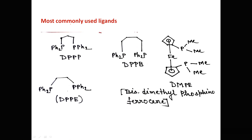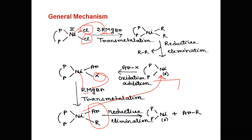Now we see the most commonly used ligands for Kumada coupling reactions. These are: dppp (diphenylphosphinopropane), dppp (diphenylphosphinobutane), bis(dimethylphosphino)ferrocene, and diphenylphosphinoferrocene. All of these ligands are bidentate ligands. The use of bidentate ligands is more favorable because they enhance catalytic activity, and they ensure that the eliminating groups remain in the cis position on the metal, which is the necessary condition for reductive elimination.